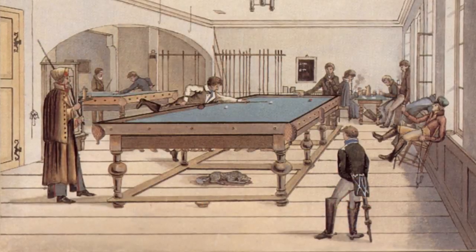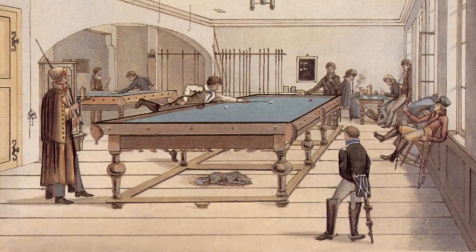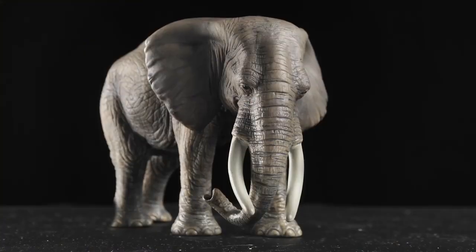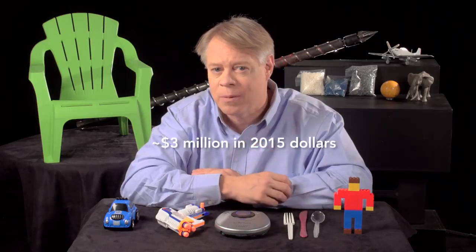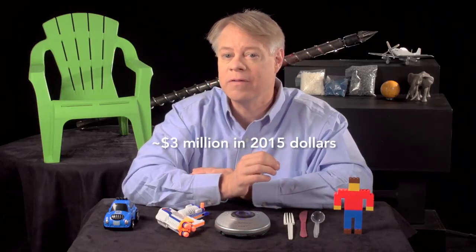Injection molding was invented to solve a problem for billiards. In the 19th century, billiard balls were composed of ivory harvested from the tusks of African elephants. This devastated the elephant population, so a billiards manufacturer offered a $10,000 prize for a replacement for ivory.